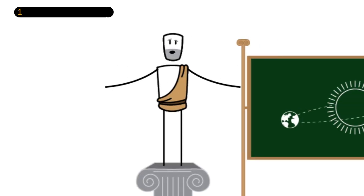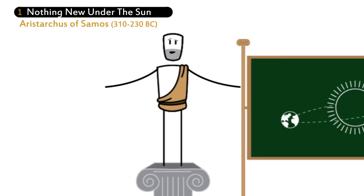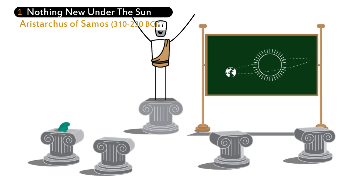The notion that the earth revolves around the Sun was proposed as early as the third century BC but died out when it failed to garner sufficient interest or proof.